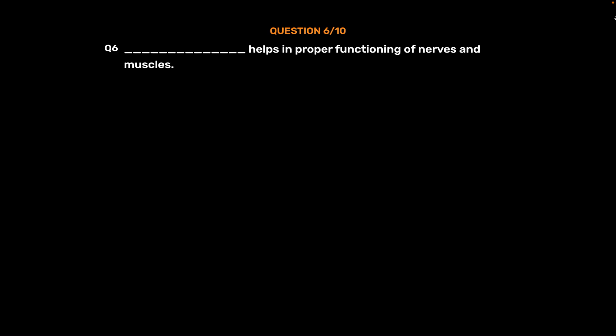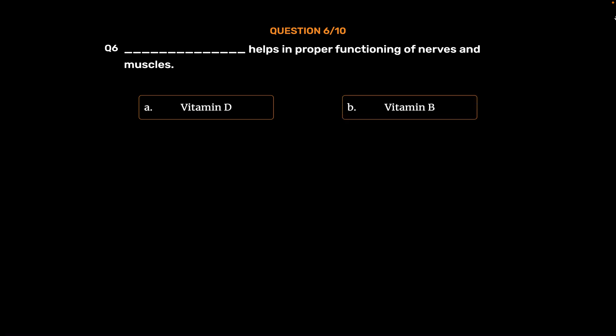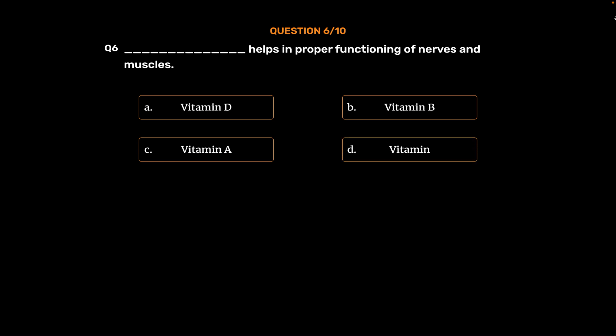Question number 6. Underscore helps in proper functioning of nerves and muscles. Option A: Vitamin D. Option B: Vitamin B. Option C: Vitamin A. Option D: Vitamin.